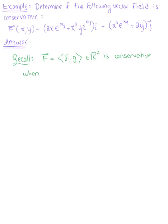Let's begin by reminding ourselves that a vector field in R2 is conservative when the partial derivative of f with respect to y is equal to the partial derivative of g with respect to x. Remember, this is because the partial derivative of phi with respect to xy is equal to the partial derivative of phi with respect to yx, because order doesn't matter.